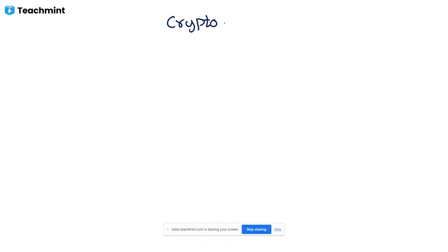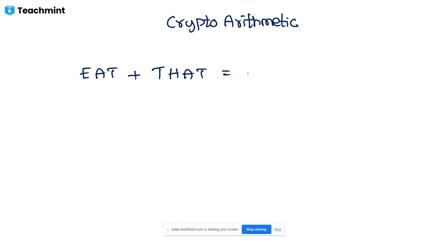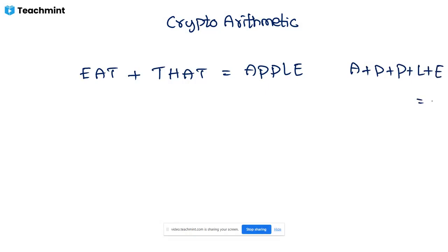Crypto arithmetic — what is this? I'll give the question first to understand things better. EAT plus DOT equals APPLE. You have to find A plus P plus P plus L plus E — calculate this value.